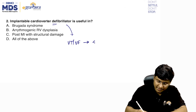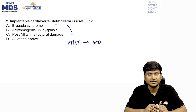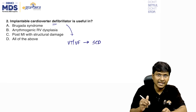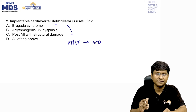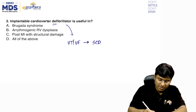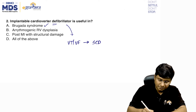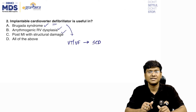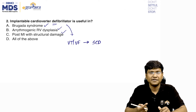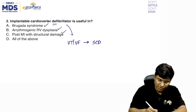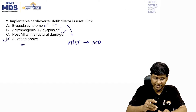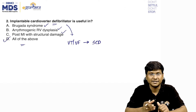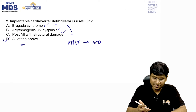Sudden onset VT or VF causing sudden cardiac death can occur in Brugada syndrome, arrhythmogenic right ventricular dysplasia, and post myocardial infarction with structural damage. In all three conditions there can be VT and VF causing sudden cardiac death, so all three conditions require an implantable cardioverter defibrillator. The correct answer is all of the above.